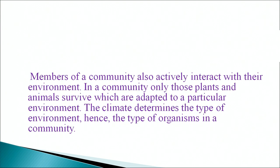The interactions between various populations inhabiting the area also define community structure. Members of a community actively interact with their environment. Only those plants and animals survive which are adapted to a particular environment. The climate determines the type of environment and hence the type of organisms in a community. For example, it is the climate of an area which determines whether it becomes a desert or a forest. The species composition or diversity differs from one community to another.